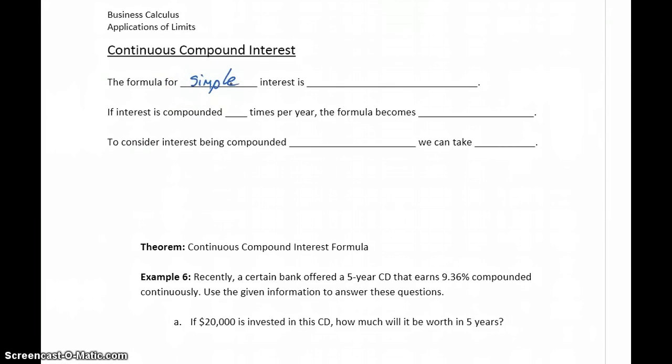So we can start off with the formula for simple interest, which is our total amount is equal to the principal that we invest, plus the principal, or again that original amount that we invest, times some rate over a period of time. Or, factoring out that value for P, this becomes P times 1 plus RT.